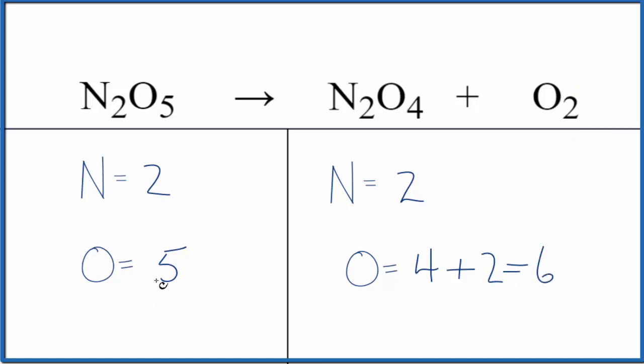Why don't we get this to be an even number? That's often helpful. So two times the whole thing, two times two gives us four nitrogens, and five times two gives us ten oxygens.